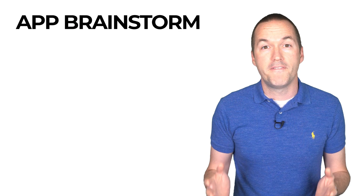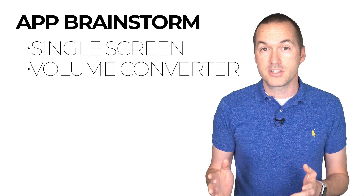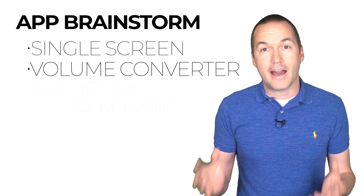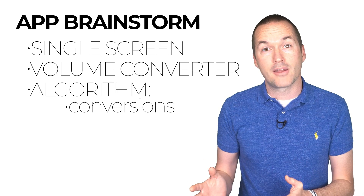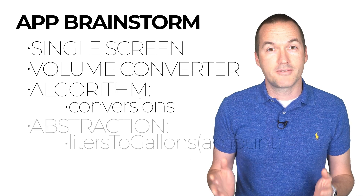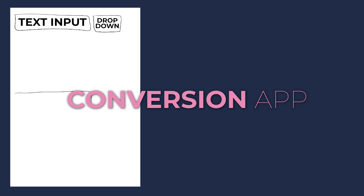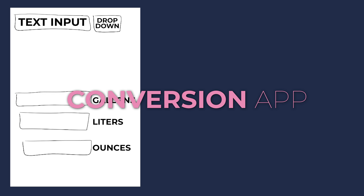For this tutorial I'm going to create a very simple one-screen app that accepts units of volume and converts them into other units of volume. I can satisfy the algorithm requirement by using a mathematical equation to convert from one unit to another, and I can create abstractions for each of the conversions, such as liters to gallons. My screen will need to have a text input box and a drop-down box containing different volume units, and the bottom of the screen will contain the converted values in text areas with labels for their unit type.